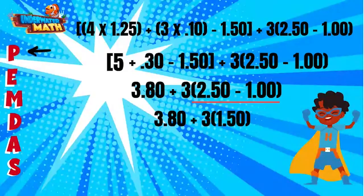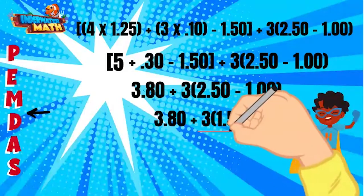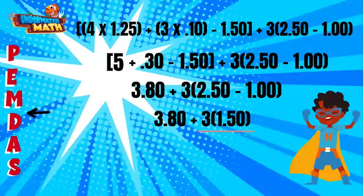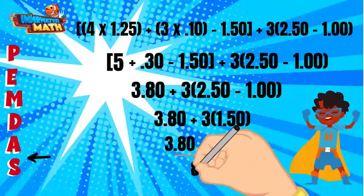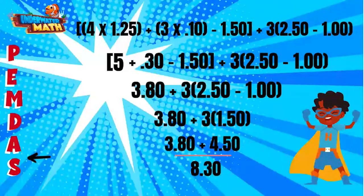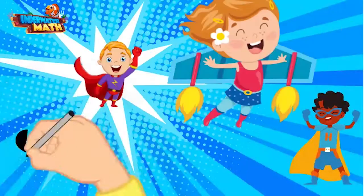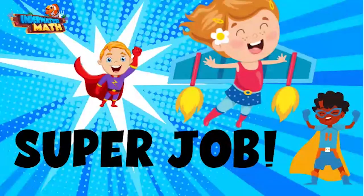Since there is nothing left to solve within the parentheses, we continue to work our way through PEMDAS. We do not have exponents, but we do have multiplication. Remember, a number directly next to a set of parentheses means multiplication. Three times 1.50 is 4.50. In my next line I am replacing three times 1.50 with 4.50. Finally, we move to addition and subtraction: 3.80 plus 4.50 is 8.30. This expression simplifies down to 8.30.